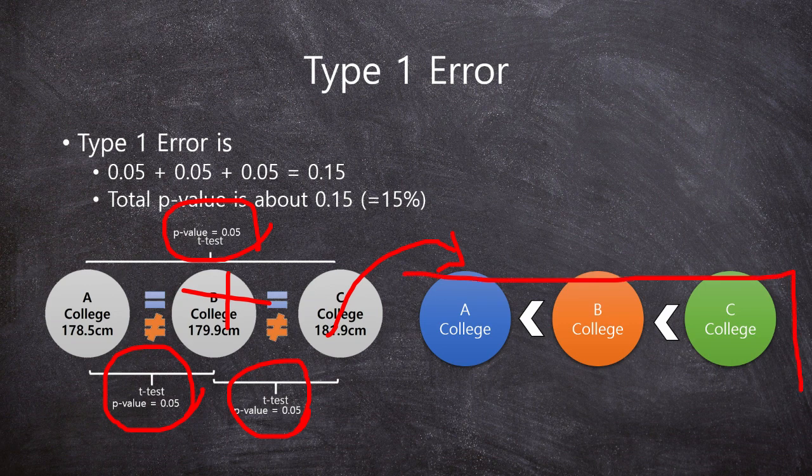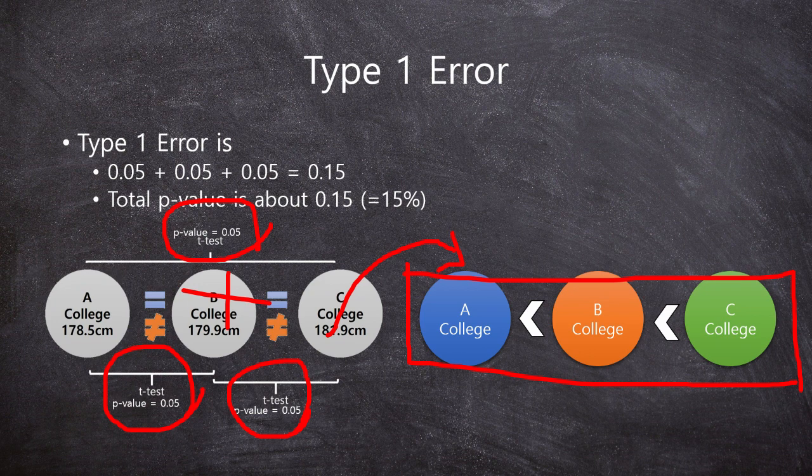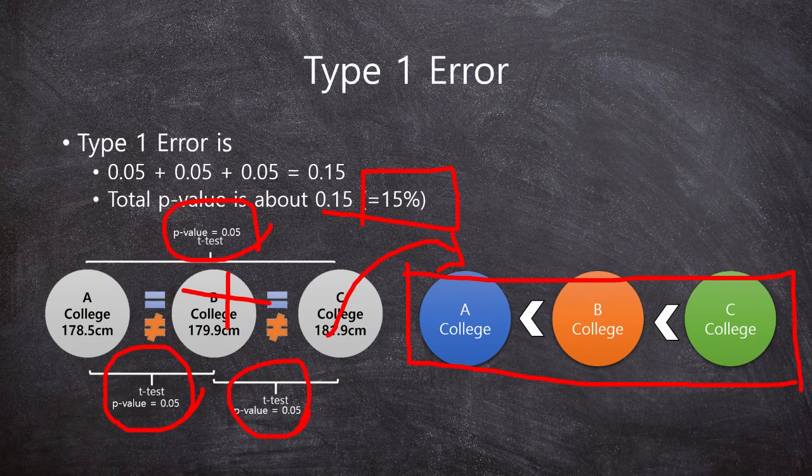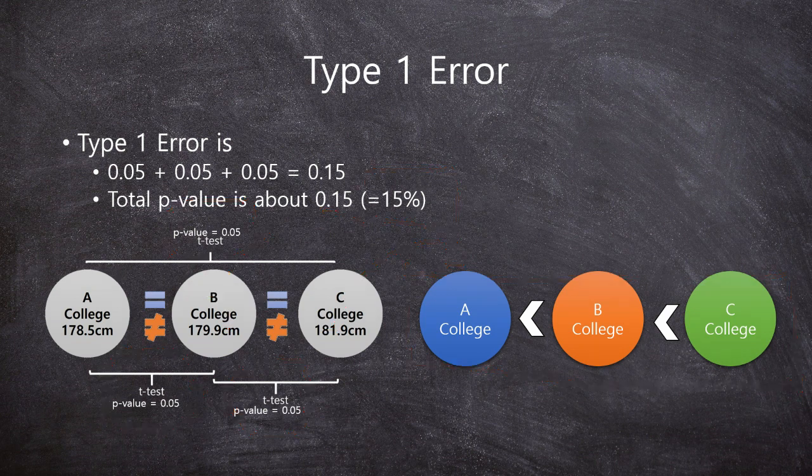So for this conclusion, we used 15% p-value, not 5%. This is the logic of the multiple t-test, and this is the problem of multiple t-test, right?